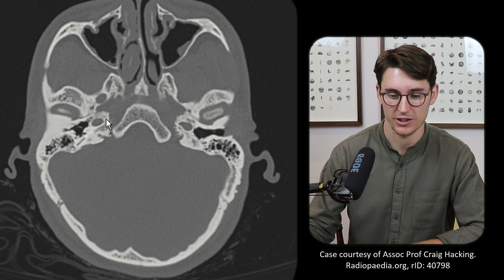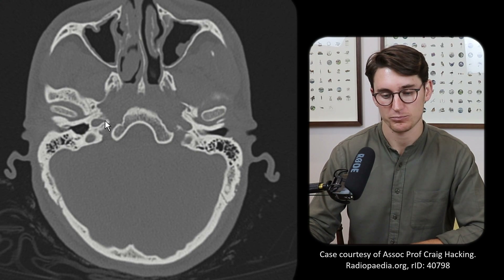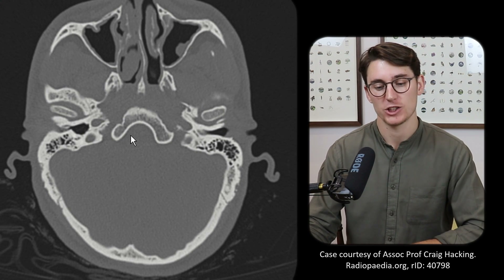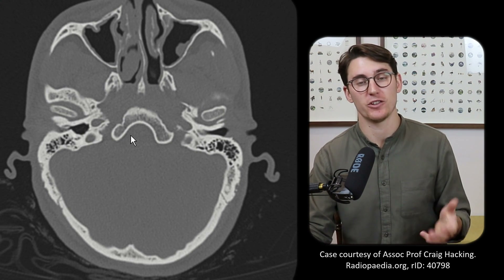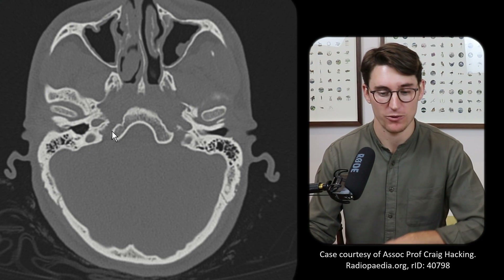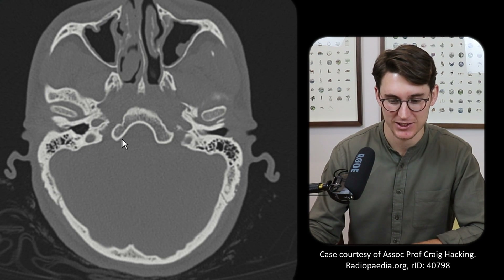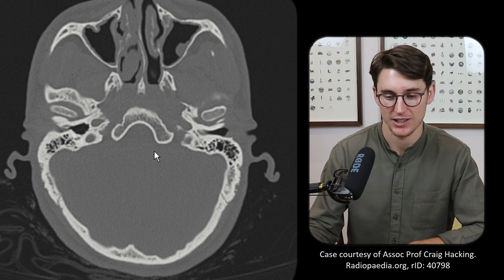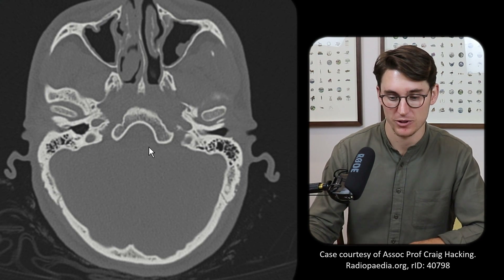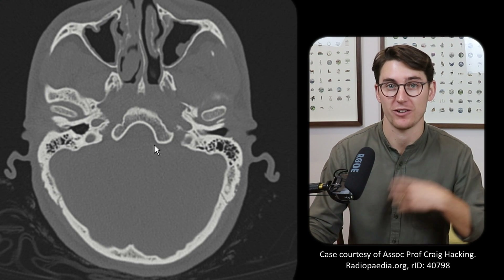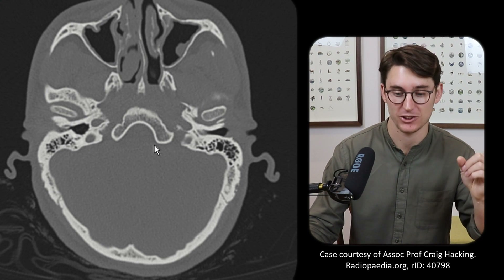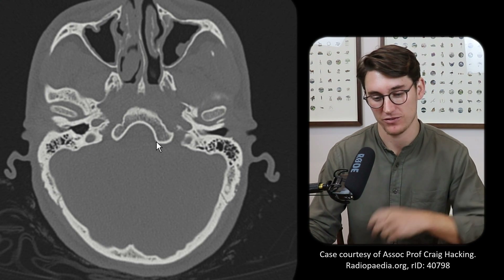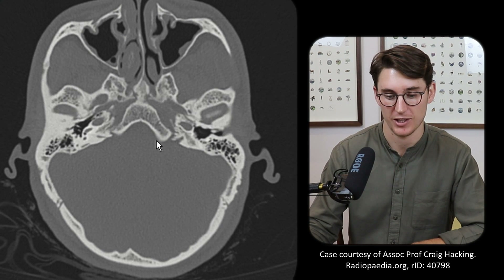We've now covered cranial nerves 1 through 6. Let's look at cranial nerves 7 and 8 — the facial nerve and the vestibulocochlear nerve. The facial nerve is number 7 and the vestibulocochlear is number 8.